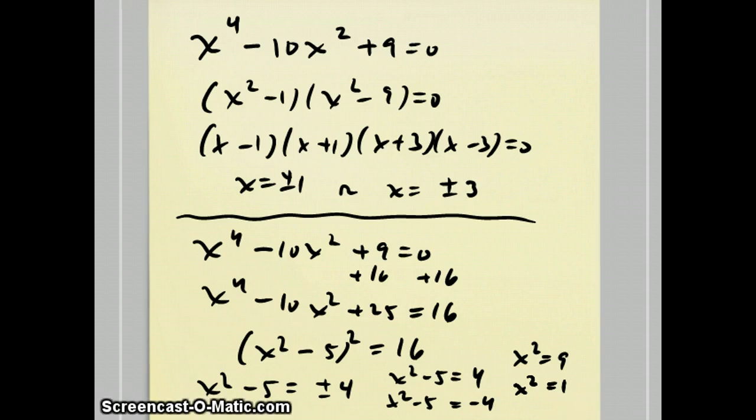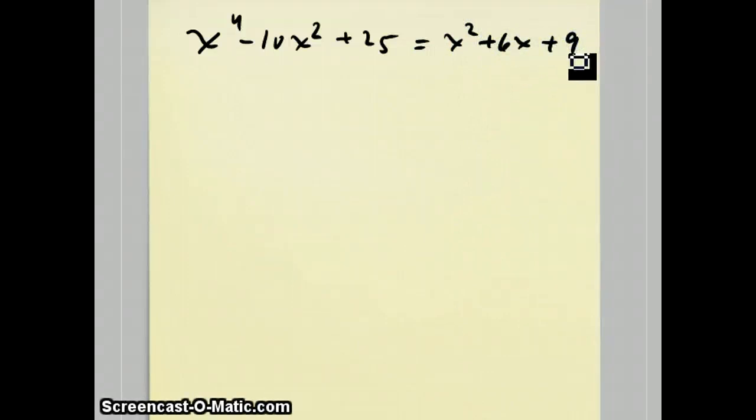This next one is going to seem pretty contrived, but I am building up to the general cubic equation. Our next example looks like this: x^4 - 10x^2 + 25 = x^2 + 6x + 9. That's an unusual equation. I could move everything over to one side, but I just want to look at it this way. Notice there's no x^3 term involved here.